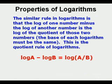The similar rule in logarithms is that the log of one number minus the log of another number is the log of the quotient of those two numbers, and the base of each logarithm must be the same. This is the quotient rule of logarithms: log a minus log b equals the log of the quotient a over b.